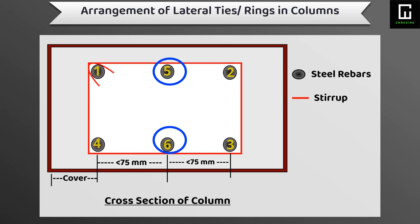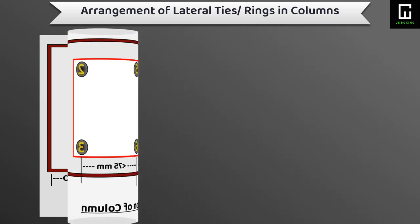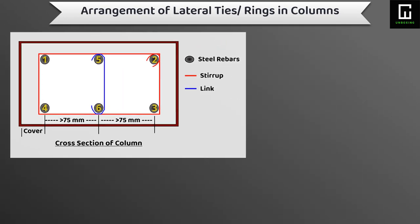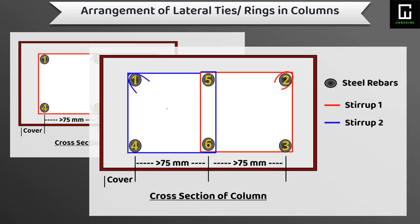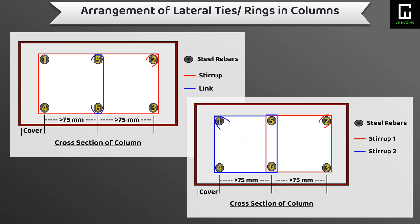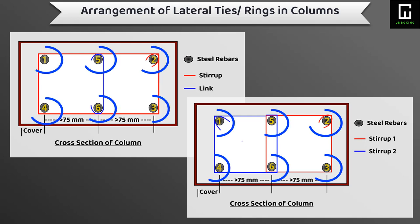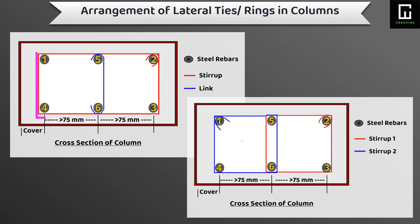Here also we can provide one regular size of stirrup or lateral ties only. In the third type of column, the column has a cross-sectional size of more than 150 mm by 150 mm with six numbers of longitudinal bars. Here also we can provide one regular size of stirrup or tie at the corner bars.